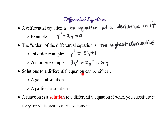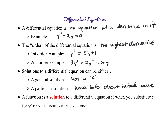You can find solutions to a differential equation — that's essentially where you're solving for y. There are two types: a general solution, where your solution has a constant c (like a general antiderivative), and a particular solution, where you have information about an initial value that allows you to solve for c. A function is a solution to a differential equation if you substitute it for y or y prime and it creates a true statement.